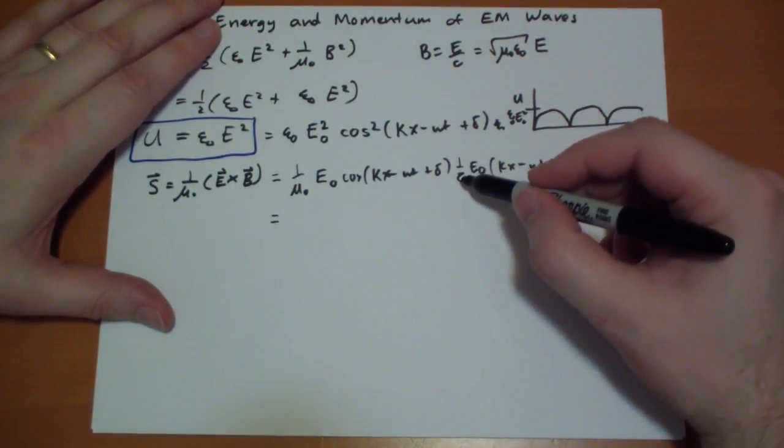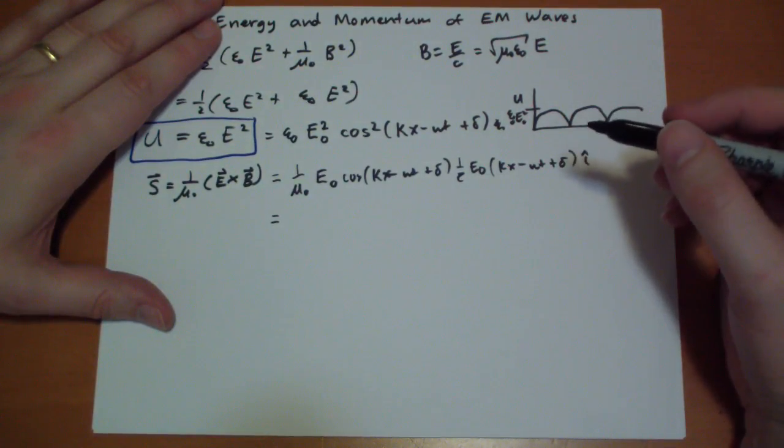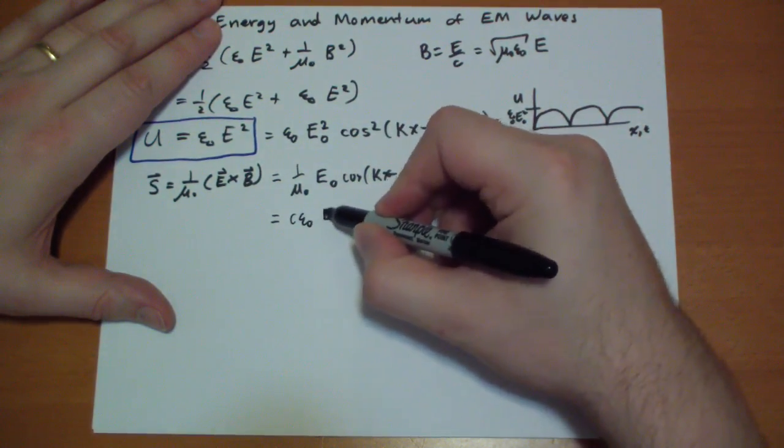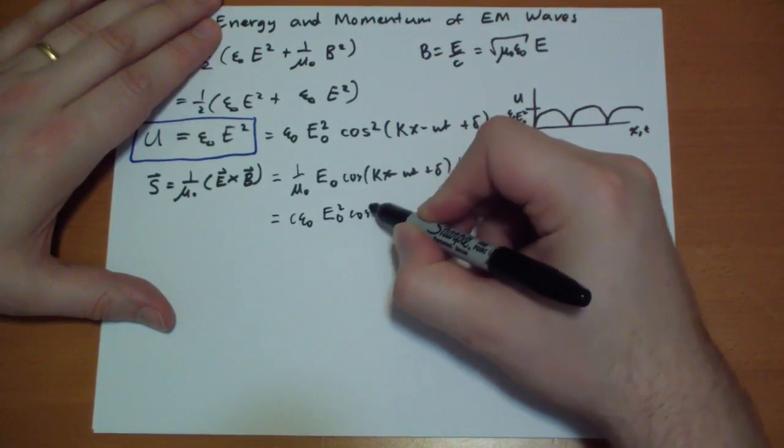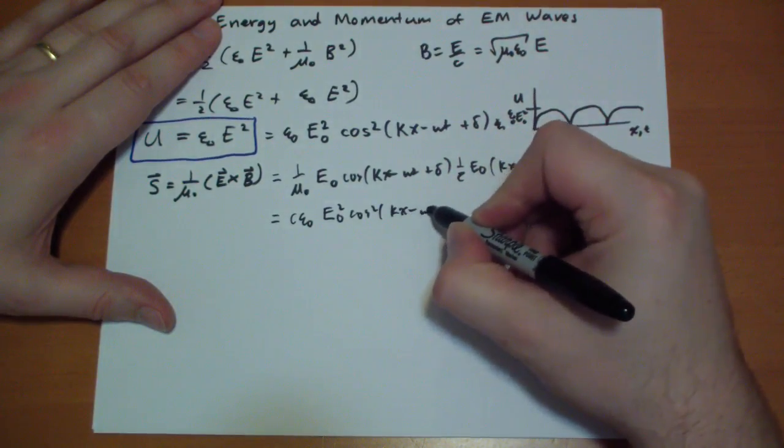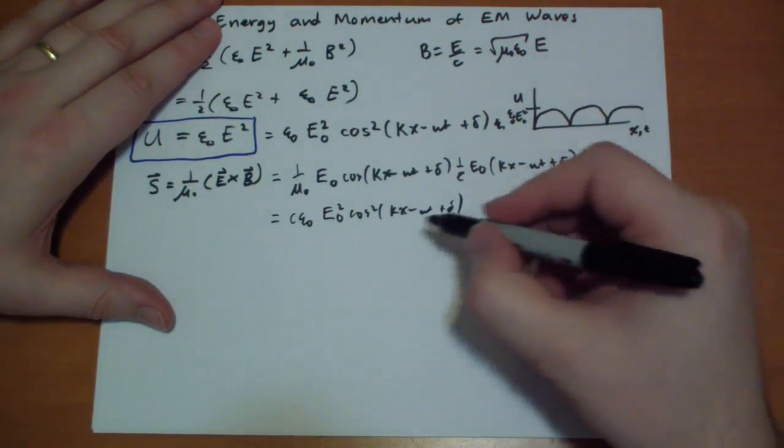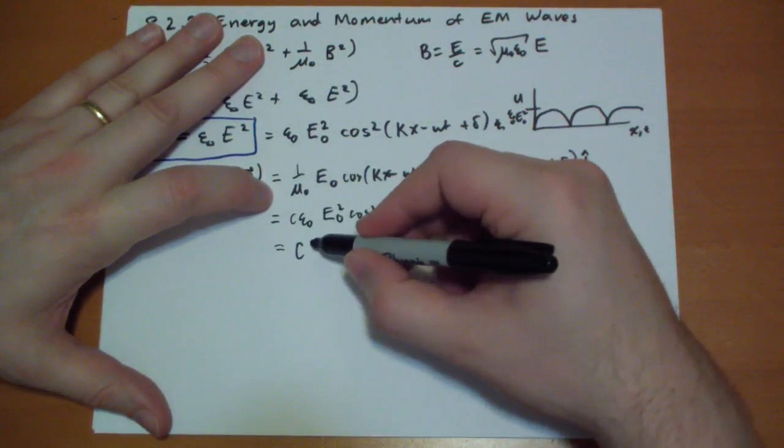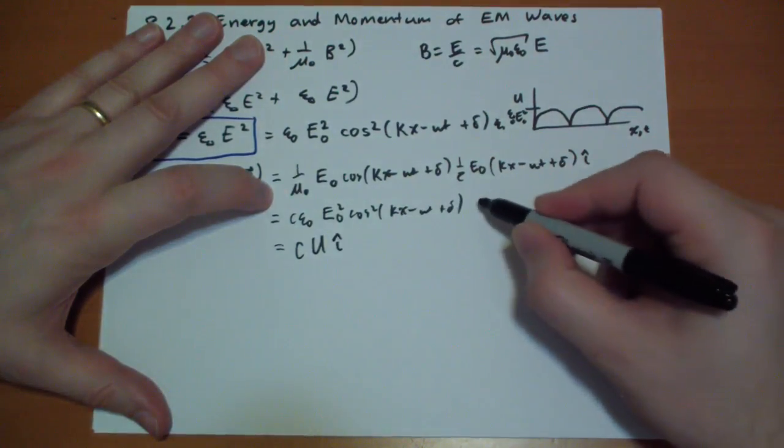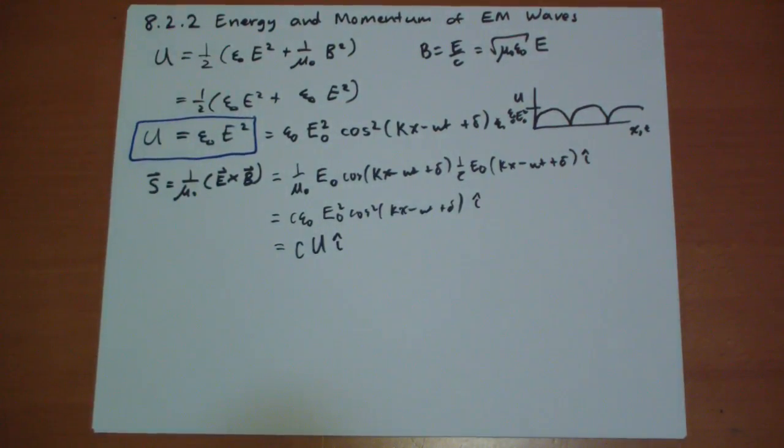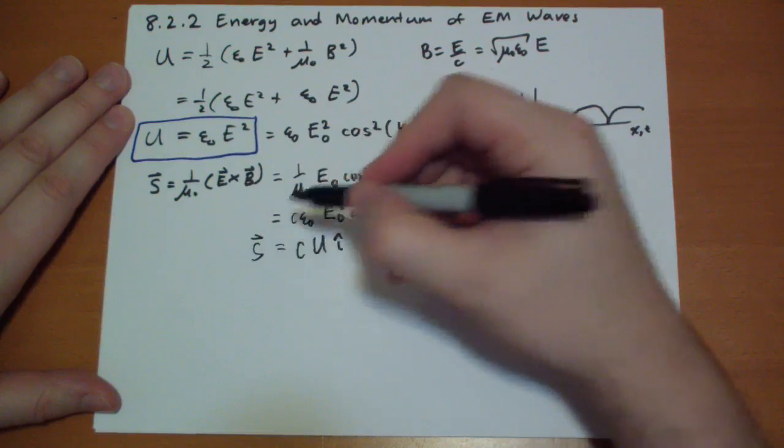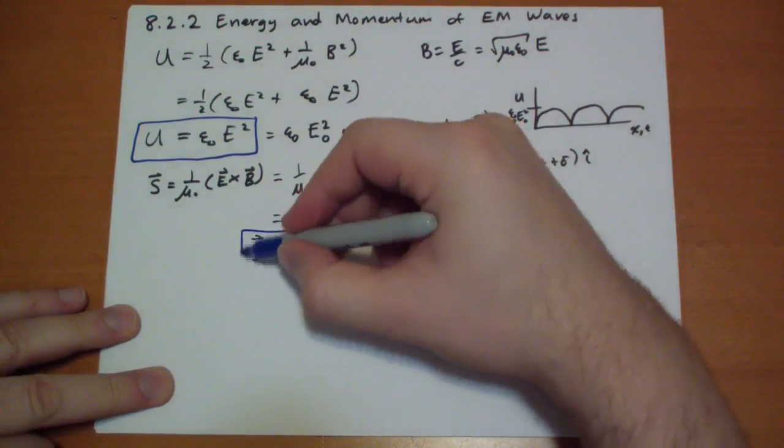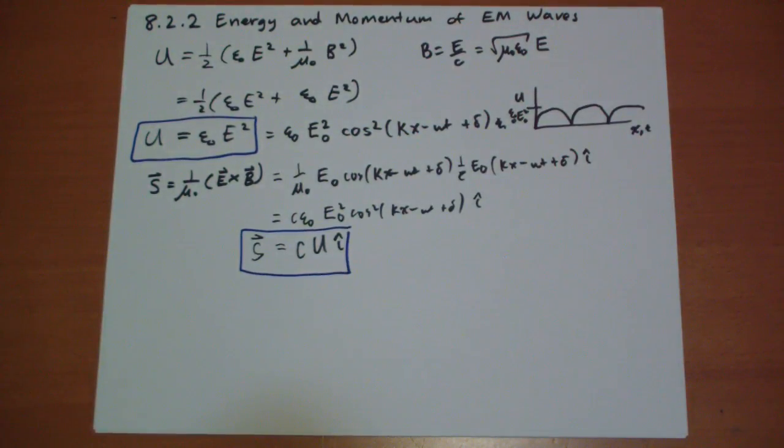Okay, so 1 over mu times 1 over c gives us c times epsilon, E-naught squared, cos squared, kappa x minus omega t plus delta, and well, E-naught, epsilon-naught, E-naught squared is just c times the potential energy pointing in the i-hat direction, that's all it is. So S vector is the speed of light times the potential energy which we derived moments before, pointing in the direction of motion.